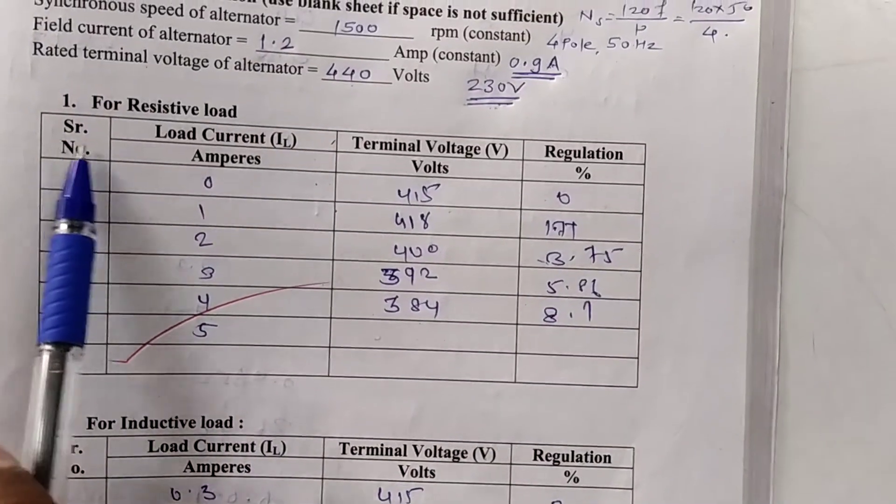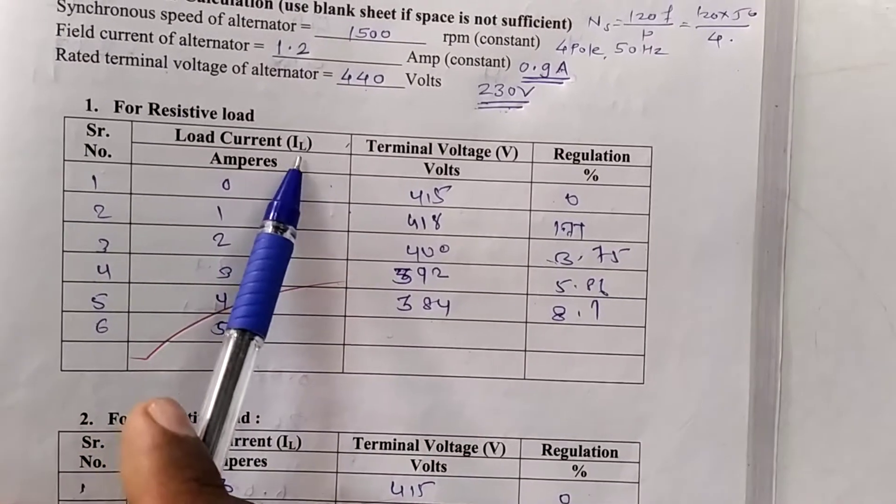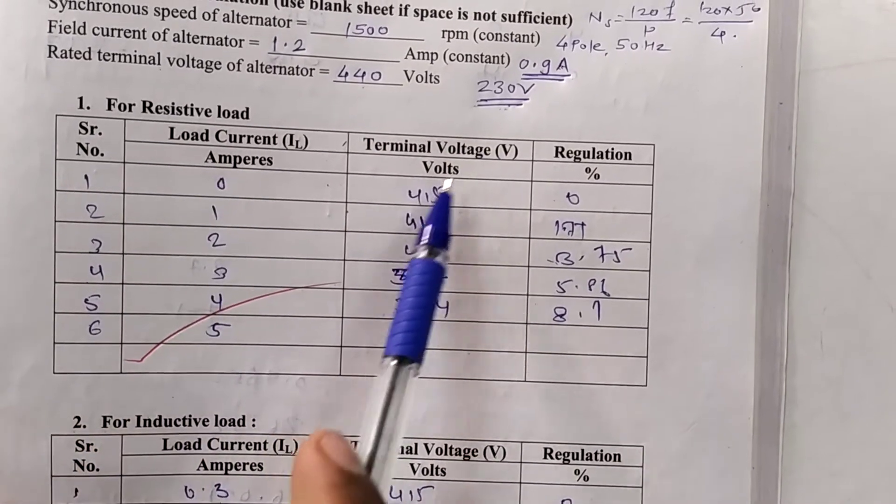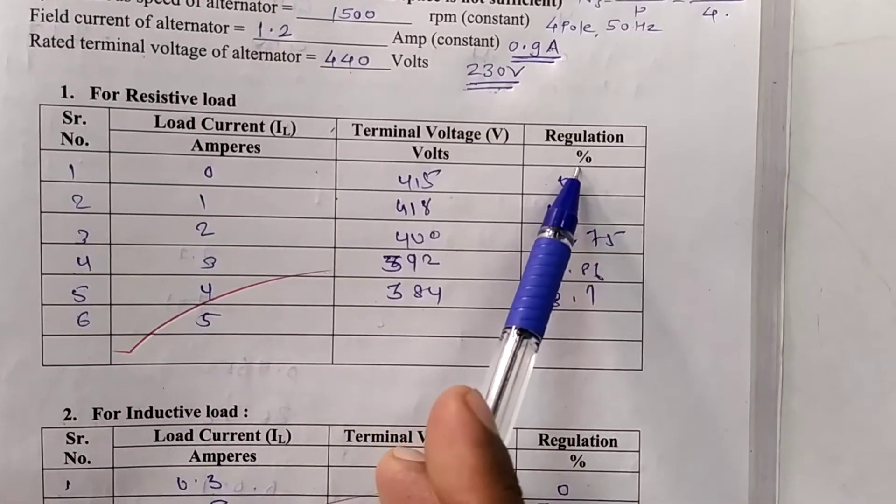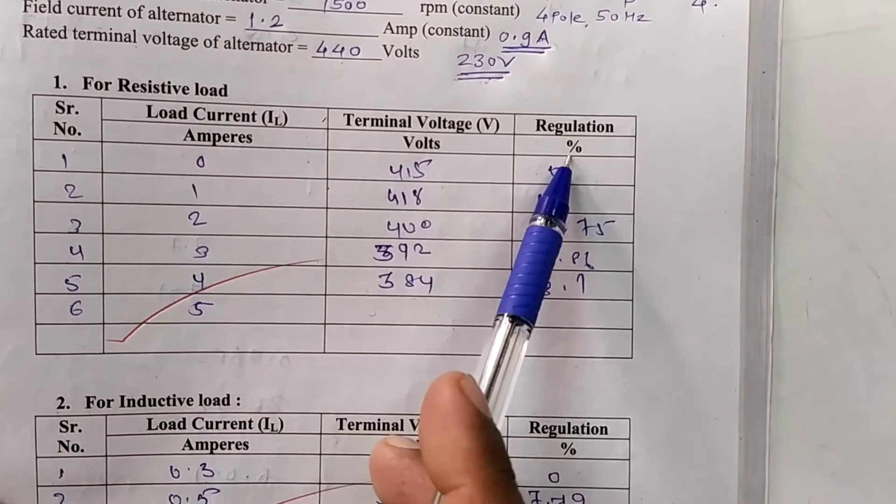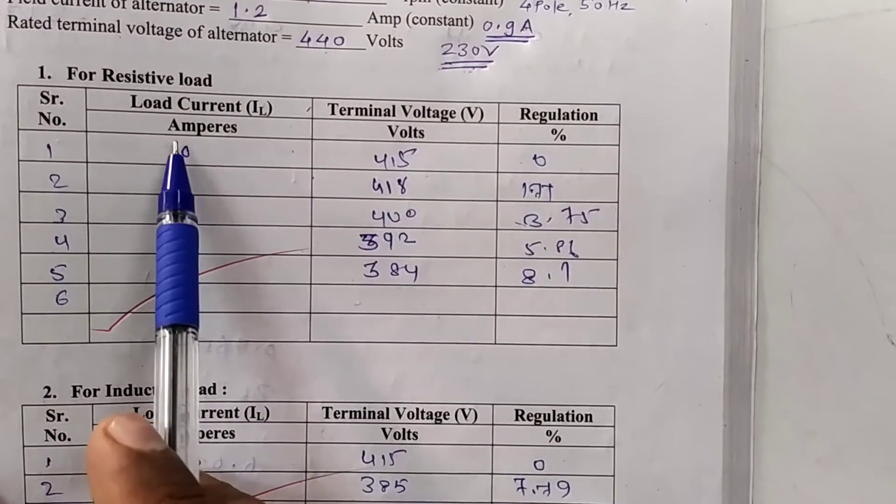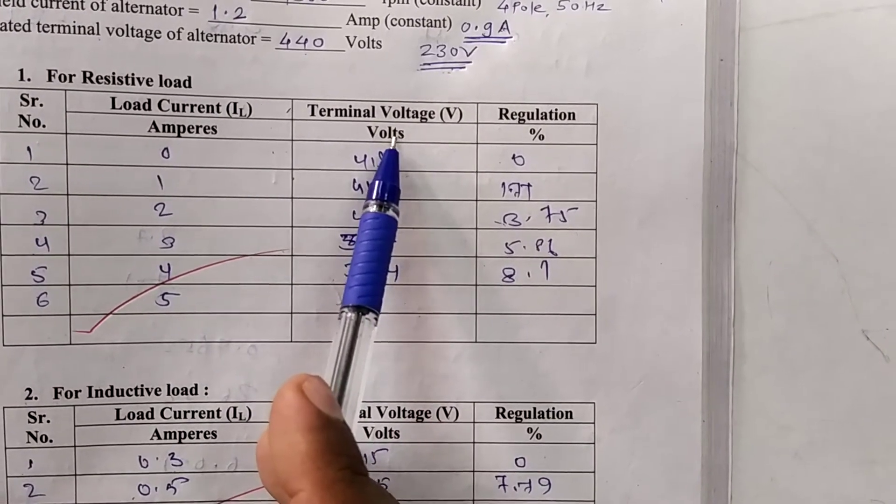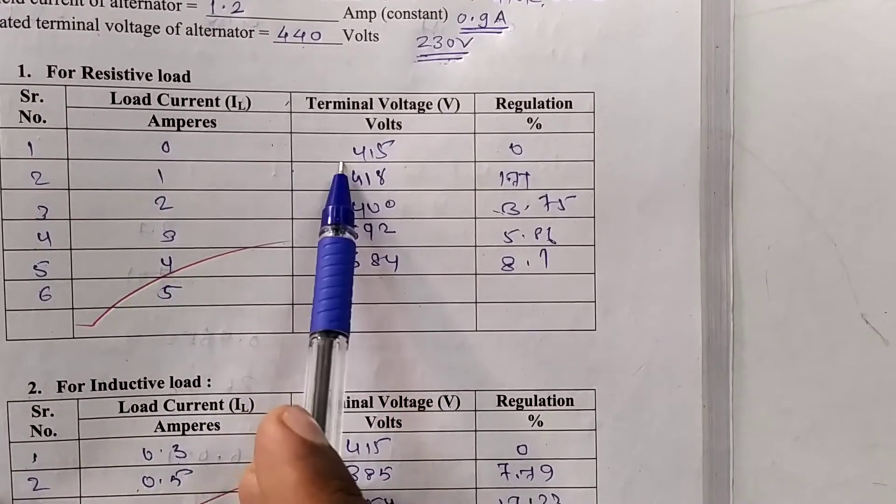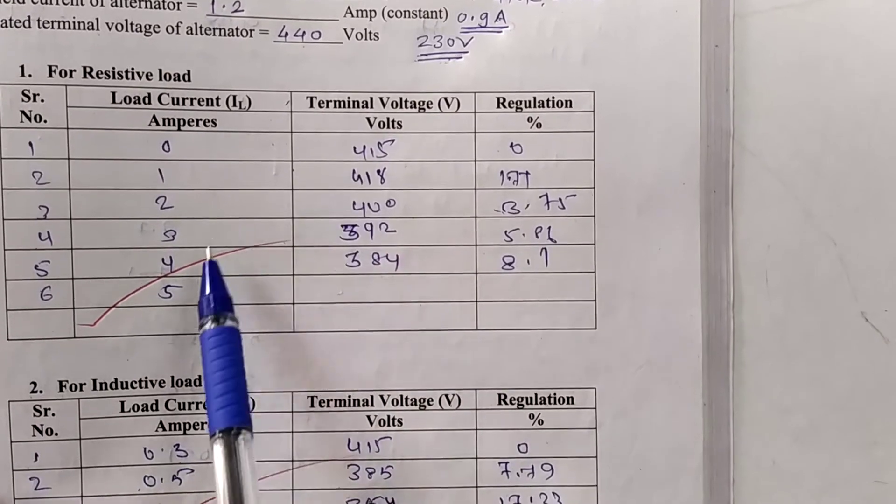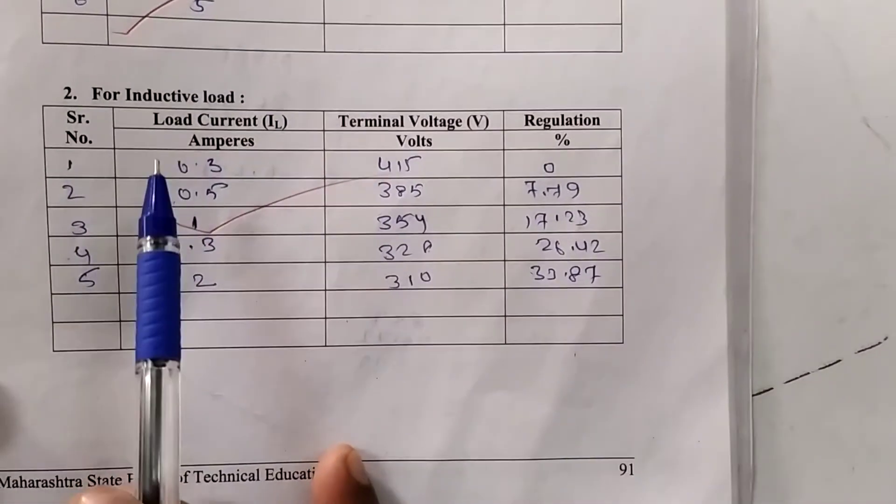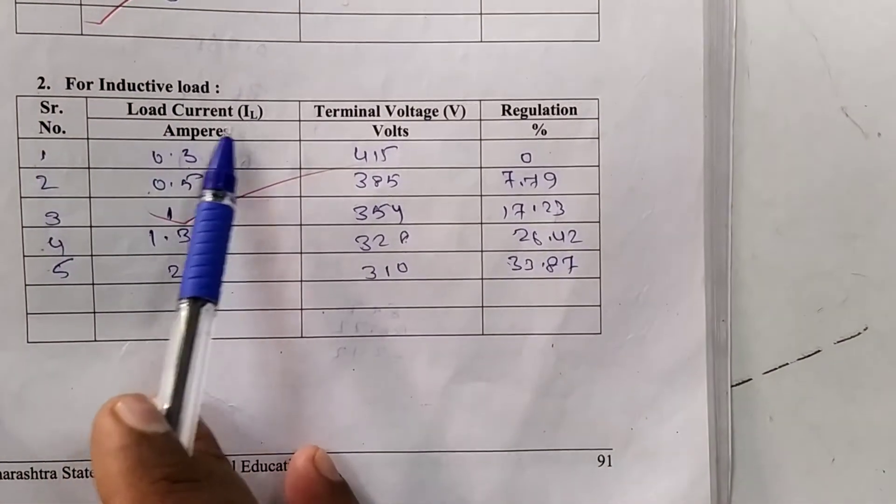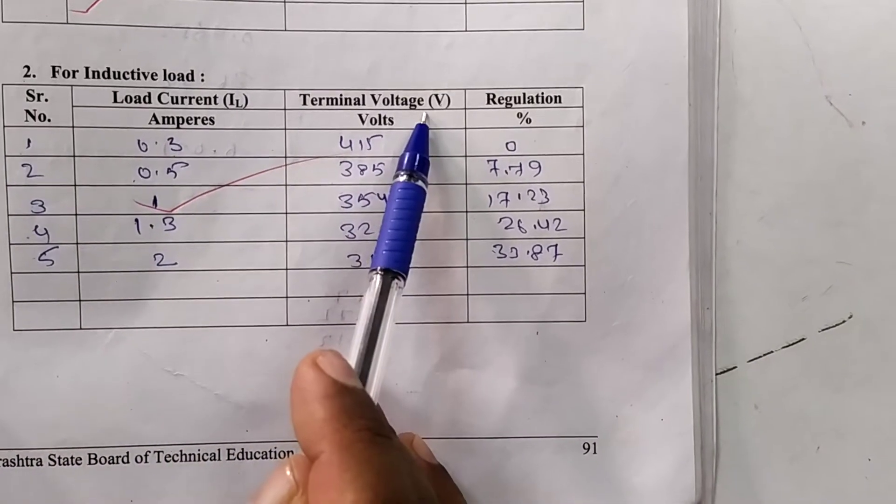For resistive load, observation table is load current means IL ampere, terminal voltage volt. And regulation is calculated according to the regulation up and down formula. Load current IL and terminal voltage V, these are the measurable quantities while performing the practicals. Similarly, for the inductive load, same parameters load current versus terminal voltage.